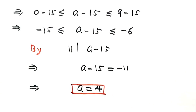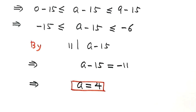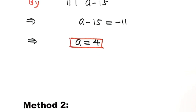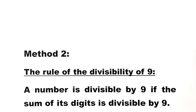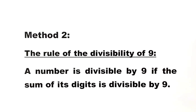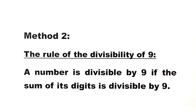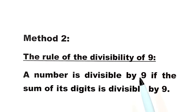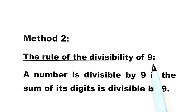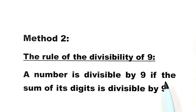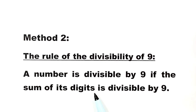Now let's see the second method. We can use the rule of divisibility of 9. The rule states: a number is divisible by 9 if the sum of its digits is divisible by 9.